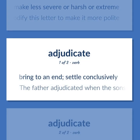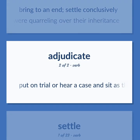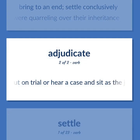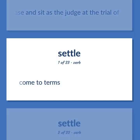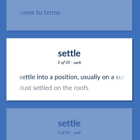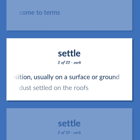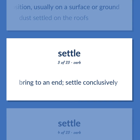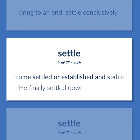Settle: bring to an end, settle conclusively — the father adjudicated when the sons were quarreling over their inheritance. Put on trial or hear a case and sit as the judge at the trial. Come to terms. Settle into a position, usually on a surface or ground — dust settled on the roofs. Become settled or established and stable in one's residence or lifestyle — he finally settled down.